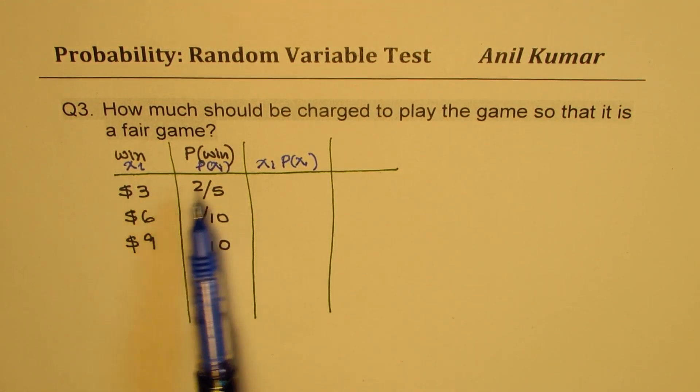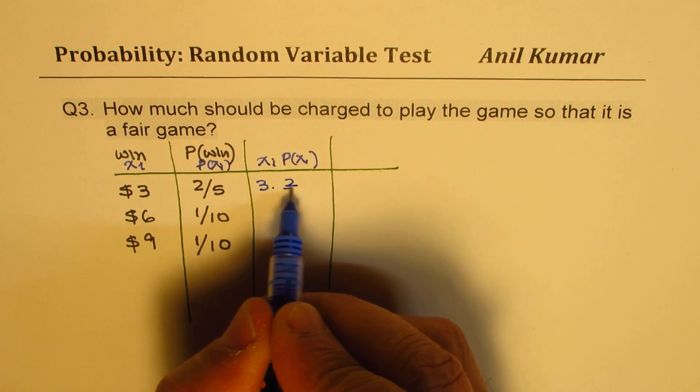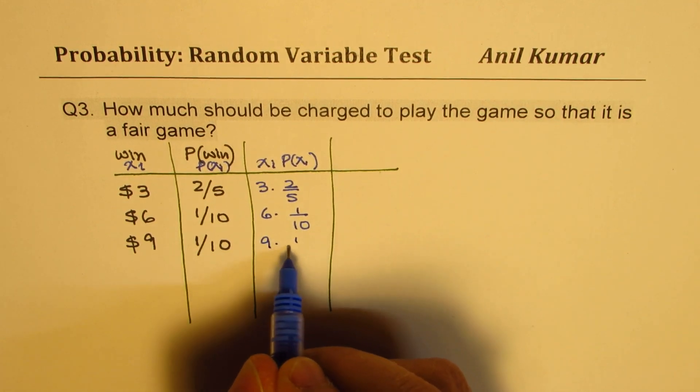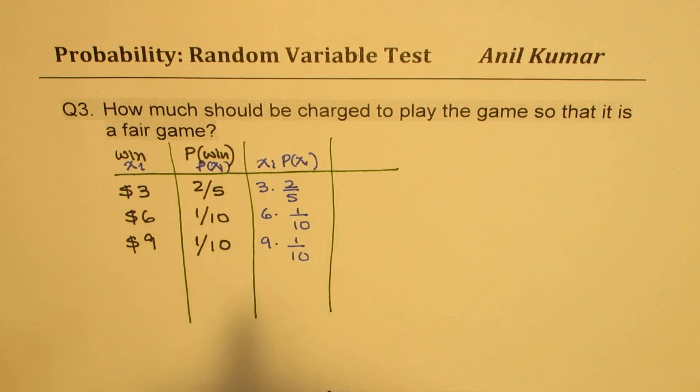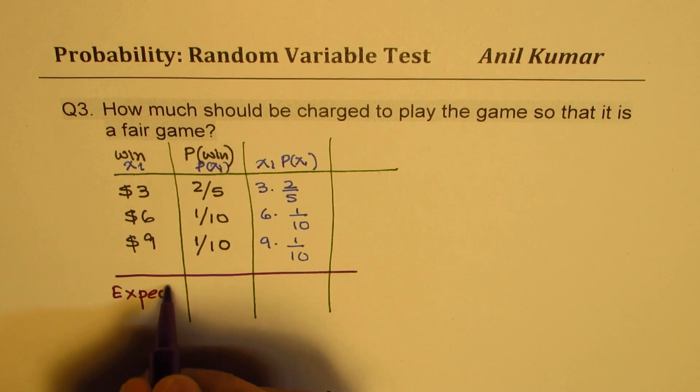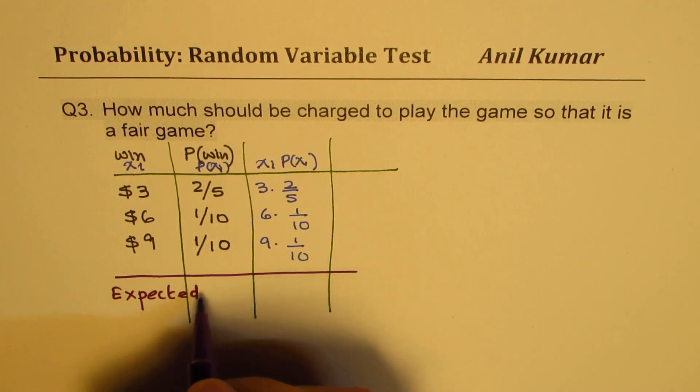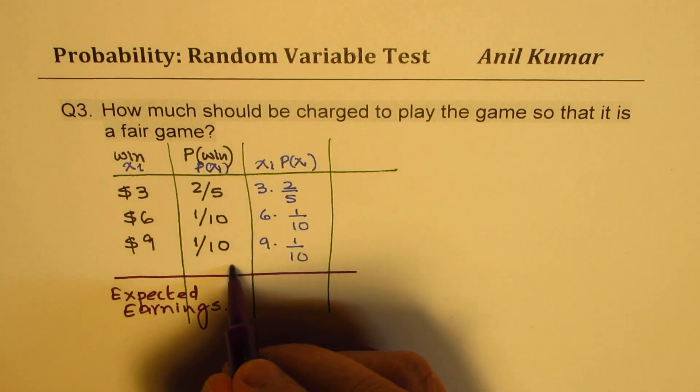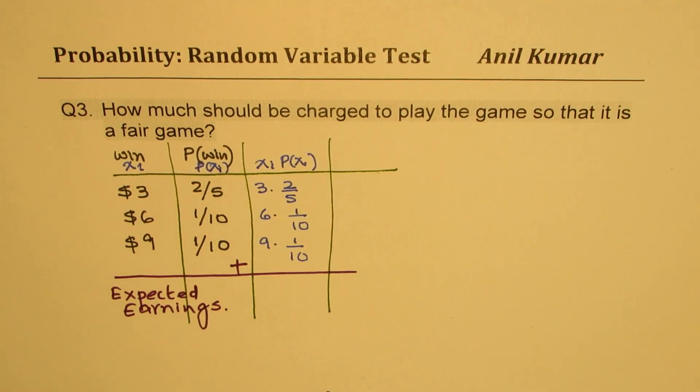So Xi times probability of Xi to get us the fair game. So the probability of winning, your winning in this game is the product of these two. So we get 3 times 2 over 5, 6 times 1 over 10, and 9 times 1 out of 10. These values we have to add to get our expected earnings. So when you add them, we get expected earnings.